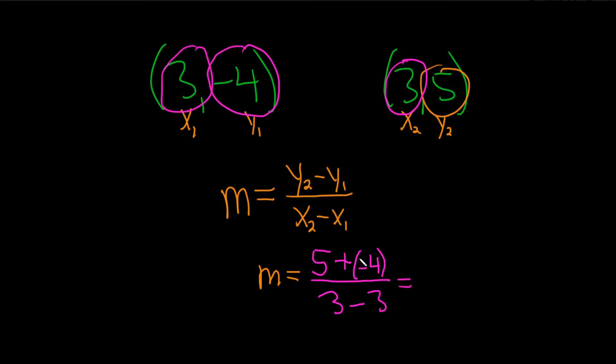So here we get 5 plus 4 which is 9 divided by 0. And so whenever you get 0 on the bottom, you have an undefined slope because this number is undefined.